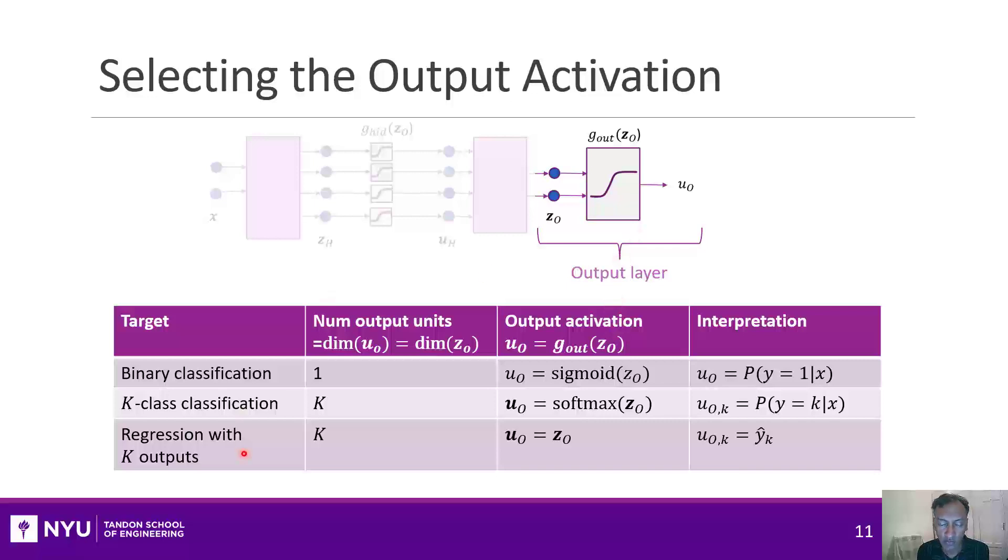You can also use it for regression problems. Remember, regression problems are the case where the target is a real value, and you could have a single scalar output value or you could have k values. Whatever number you have, k, you pick the output to have the same number of units as the target. In this case, you just don't apply any mapping, or an identity mapping, and in that case the output is just the estimate for that target.